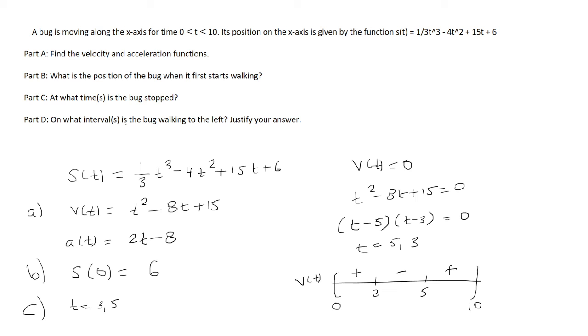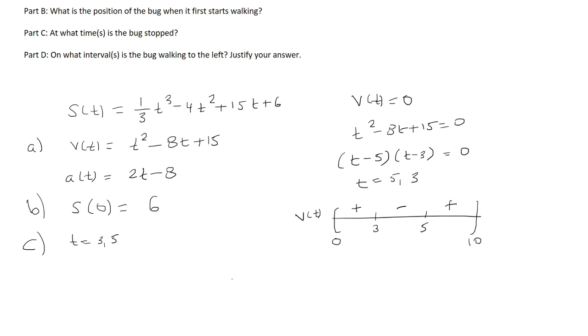And what intervals is the bug walking to the left? Justify your answer. So that is when the derivative is negative, so the derivative of the position function. In other words, when the velocity is negative.